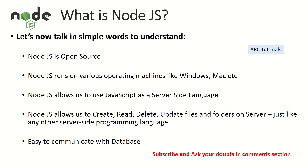Using Node.js, we can use JavaScript as a server-side language. So what can we do on a server? Some popular use cases include logging, creating log records, input/output data, creating and updating folders and files. Node.js allows us to create, read, update, and delete files and folders on a server, just like any other server-side language. It also makes it easy to communicate with databases through frameworks like Express.js, and helps us build the integration layer or middleware.